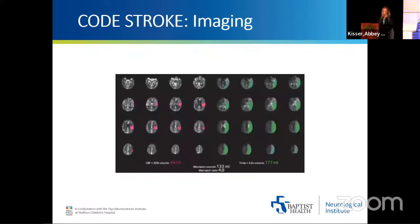CT perfusion is really helpful when determining whether to proceed with endovascular intervention. On the left you have the core infarct — the infarcted tissue we cannot get back — and on the right is the penumbra, the at-risk tissue that is the portion of the brain we're trying to save. It's calculated in volume: 44 mL for the core infarct, 177 mL for the penumbra, giving us a 133 mL mismatch — a lot of tissue that could potentially be saved.